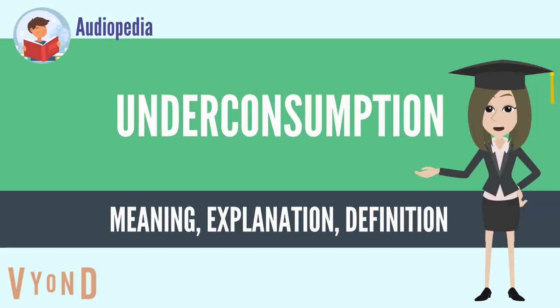Underconsumption theory in economics holds that recessions and stagnation arise due to inadequate consumer demand relative to the amount produced. This means there is overproduction and a demand crisis. The theory forms the basis for the development of Keynesian economics and the theory of aggregate demand after the 1930s.